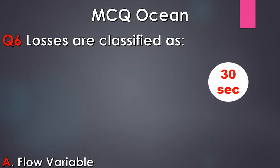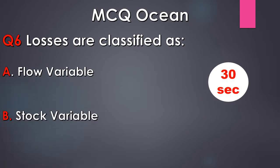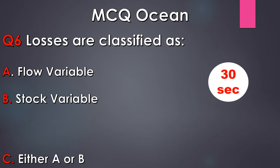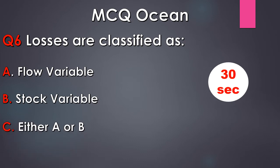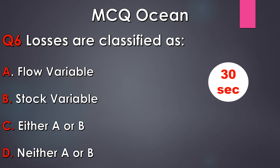Question number 6. Losses are classified as: A. Flow variable, B. Stock variable, C. Either A or B, D. Neither A or B. Your time starts now.